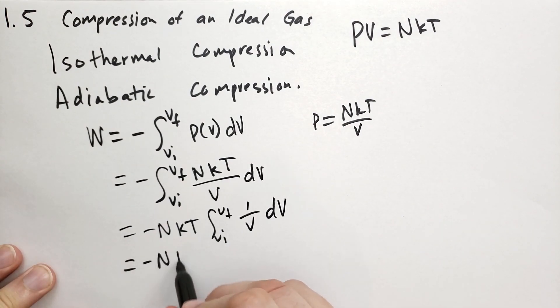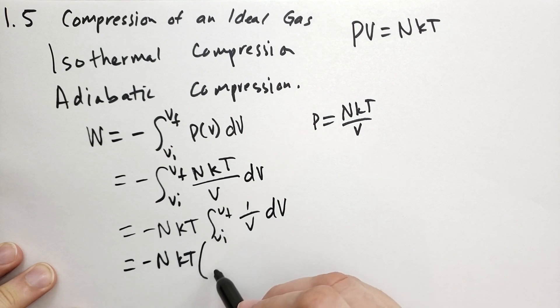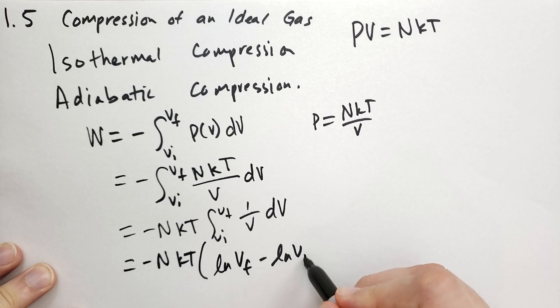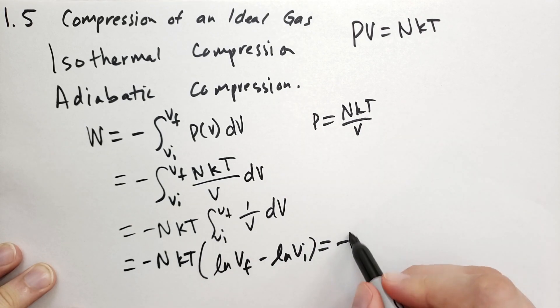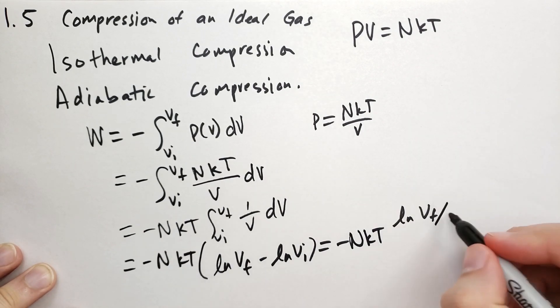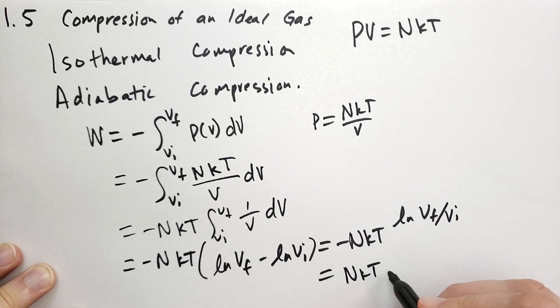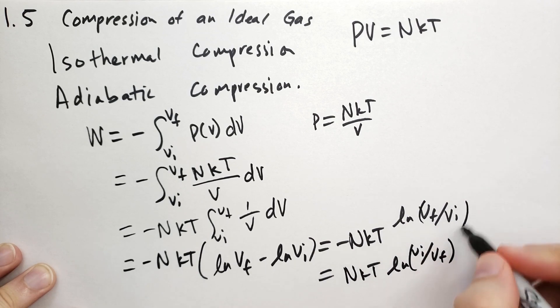Hopefully you recognize this integral as a logarithm, and so we can rewrite this as minus NKT, where we have the log of the final volume minus the log of the initial volume, which we can rewrite as just minus NKT as the log of the final volume divided by the initial volume. And we can flip this, so we get NKT log of the initial volume divided by the final volume.